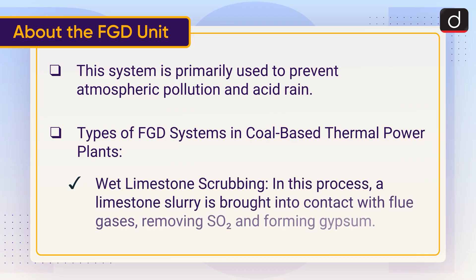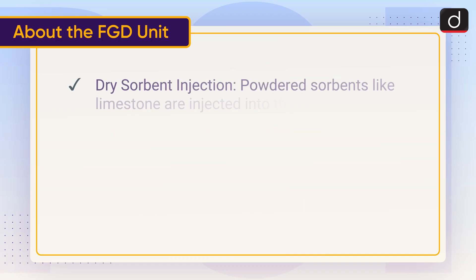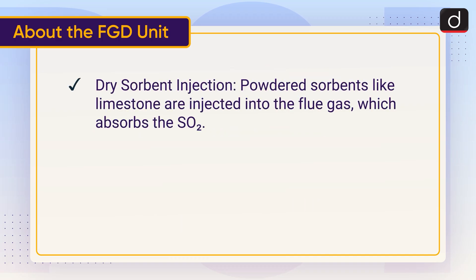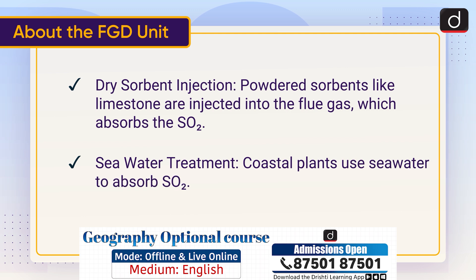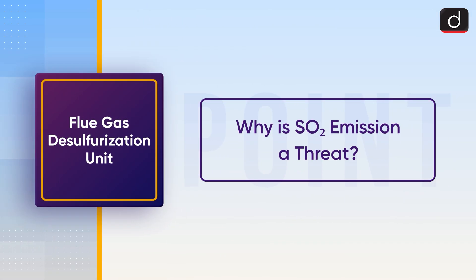There are several types of FGD systems used in coal-based thermal power plants. Wet limestone scrubbing: a limestone slurry is brought into contact with flue gases, removing SO2 and forming gypsum. Dry sorbent injection: powdered sorbents like limestone are injected into the flue gas to absorb SO2. Seawater treatment: coastal plants use seawater to absorb SO2.